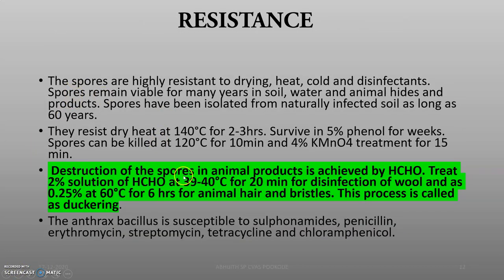Moving to resistance: destruction of spores in animal products is achieved by HCHO (formaldehyde). A 2% solution of formaldehyde at 39–40°C for 20 minutes is used for disinfection of wool, and 0.25% at 60°C for 6 hours for animal hairs and bristles.